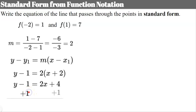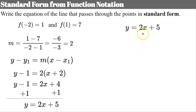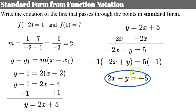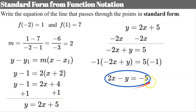Adding 1 to each side gives y equals 2x plus 5, now in slope-intercept form. Subtracting 2x from each side gives negative 2x plus y equals 5. Multiplying every term by negative 1 so the leading value is positive gives 2x minus y equals negative 5. Now the equation of this line is expressed in point-slope form, slope-intercept form, and standard form.